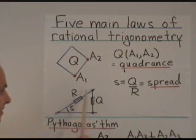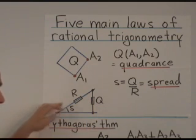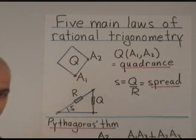If you have two lines, then the spread between them is a ratio of two quadrants, an opposite quadrants divided by hypotenuse quadrants, in any right triangle containing those two lines.